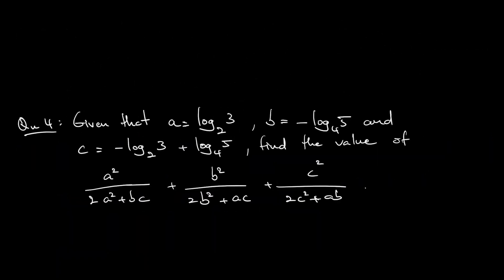Question 4. Given that A = log₂3, B = −log₂5, and C = −log₂3 + log₄5, the question asks for the value of: A²/(2A²+BC) + B²/(2B²+AC) + C²/(2C²+AB).